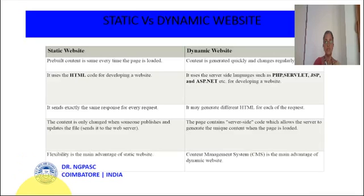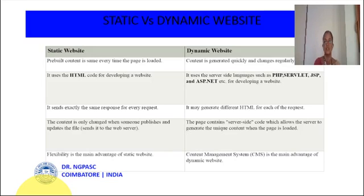Static websites have pre-built content — the data is already stored and remains the same whenever the page is loaded. In the case of dynamic websites, the content is generated quickly and changes regularly. Static websites use HTML code for development, whereas dynamic websites use server-side languages such as PHP, Servlet, JSP, and ASP.NET for developing the website.